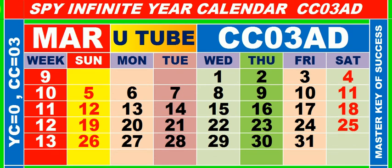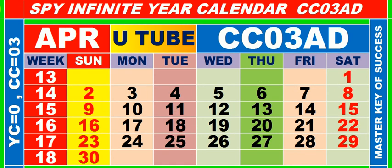Calendar for the month of March, having calendar code equal to 03. Calendar for the month of April, having calendar code equal to 03.